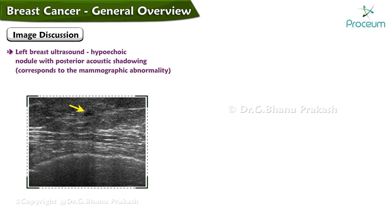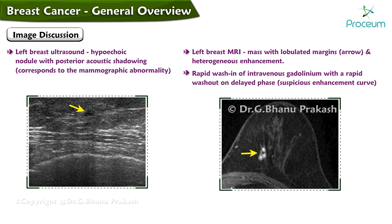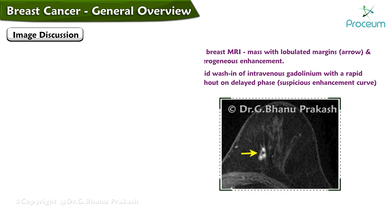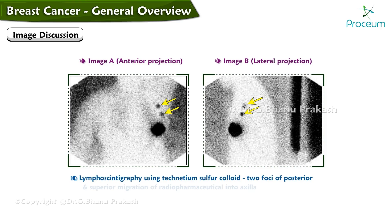Left breast ultrasound demonstrates a hypoechoic nodule with posterior acoustic shadowing corresponding to the mammographic abnormality. Left breast MRI demonstrates a mass with lobulated margins and heterogeneous enhancement, with rapid wash-in of intravenous gadolinium and rapid wash-out on the delayed phase, representing a suspicious enhancement curve. Lymphoscintigraphy using technetium sulfur colloid demonstrates two foci of posterior and superior migration of the radiopharmaceutical into the axilla.